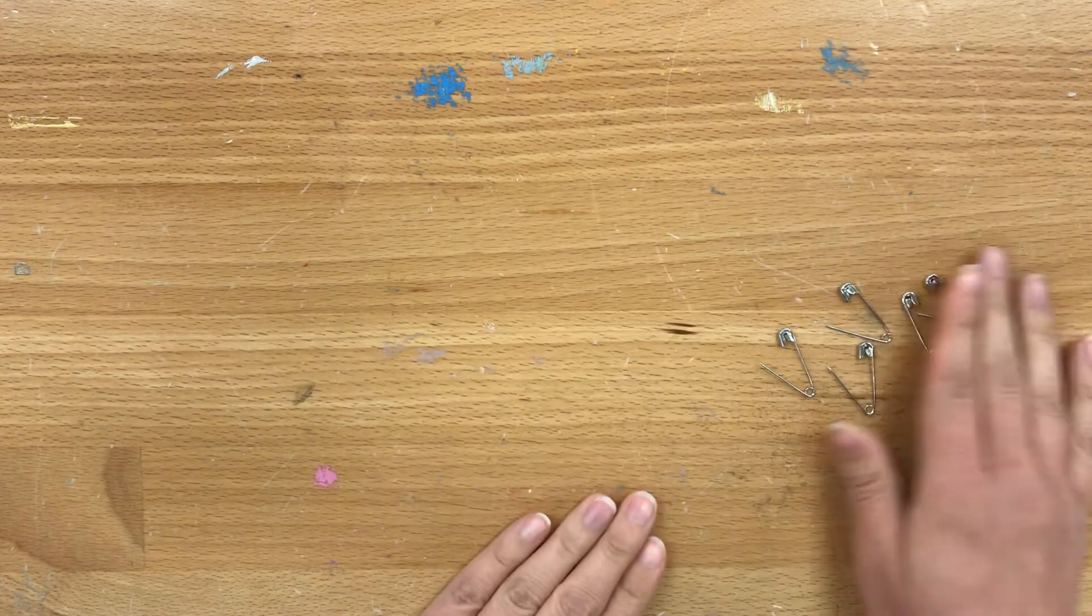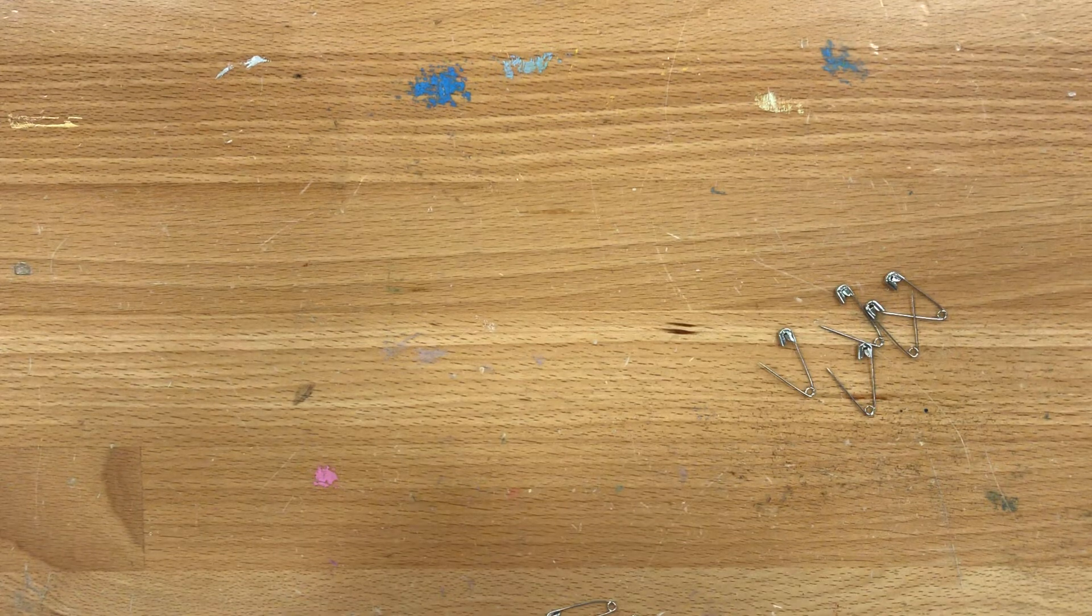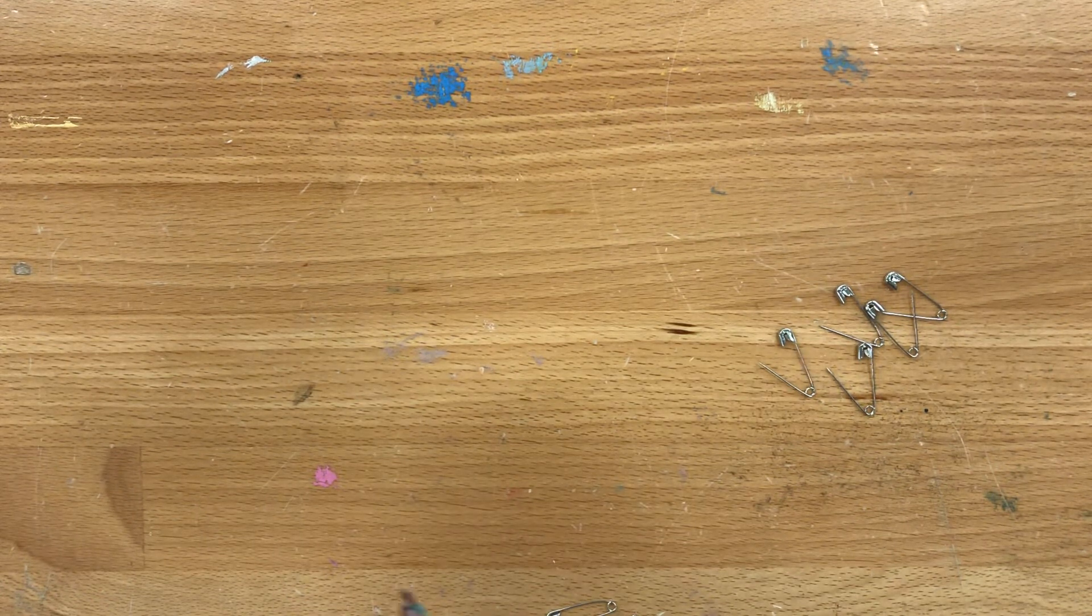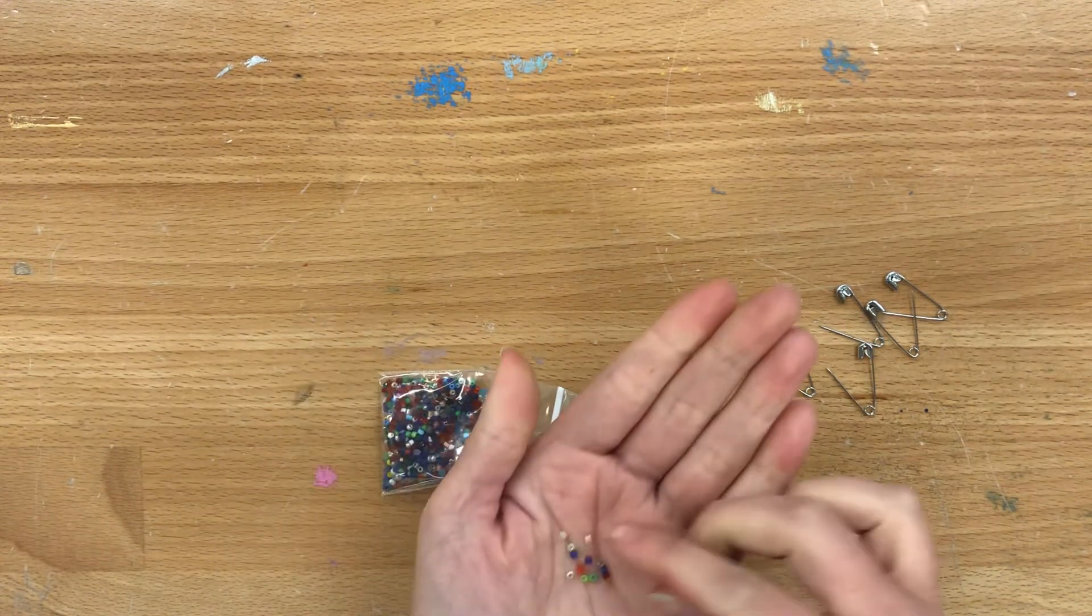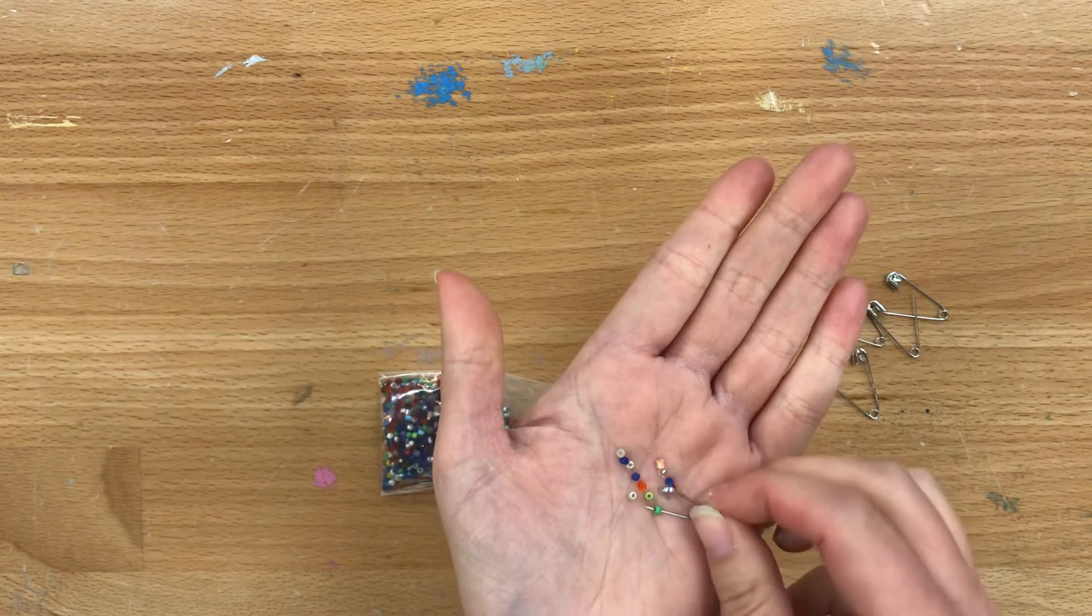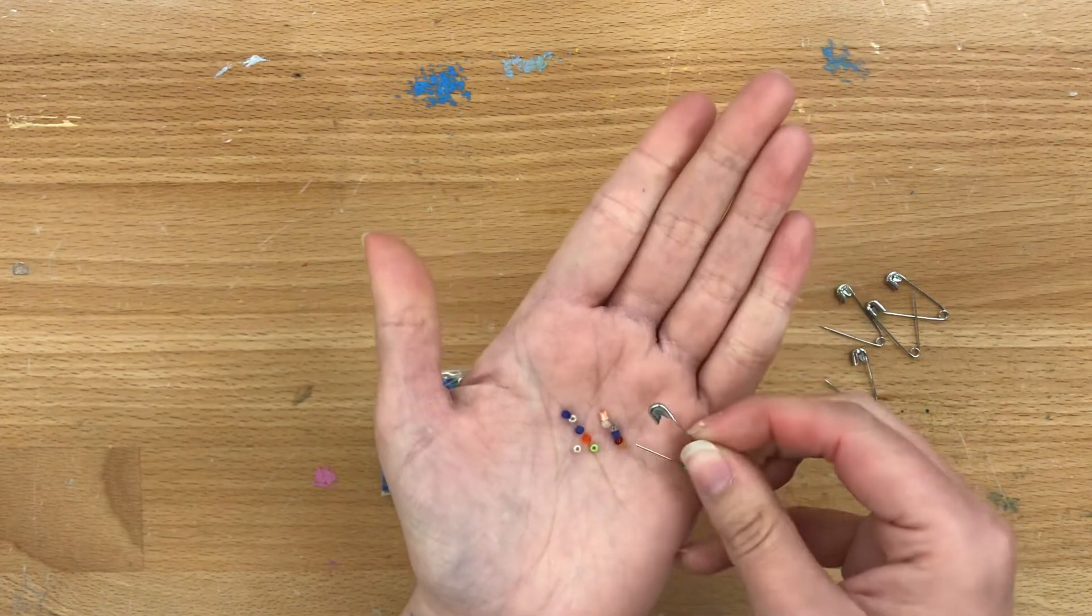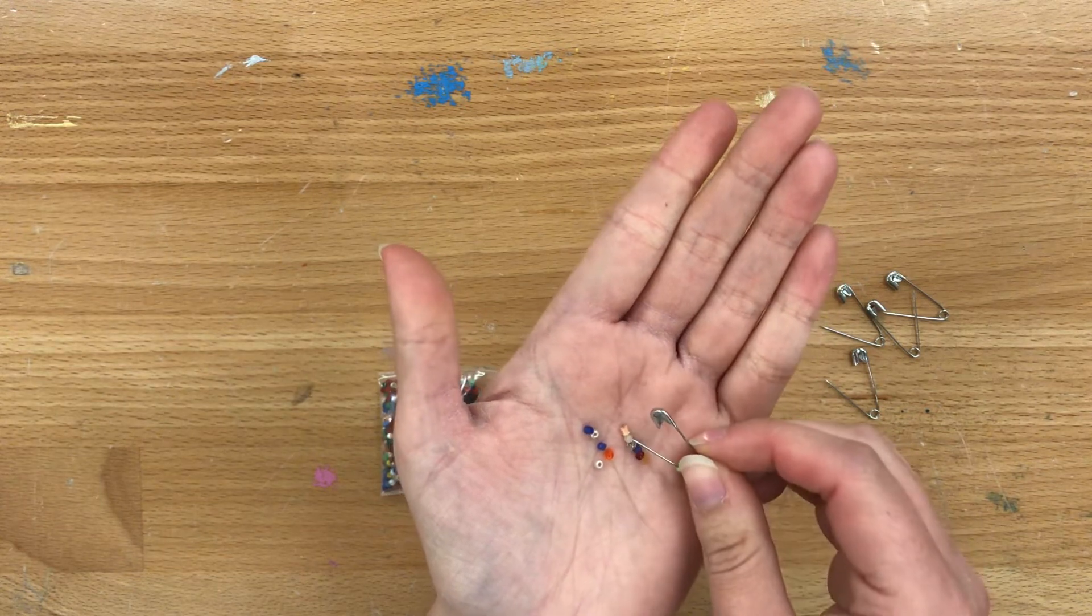So once you have all of your safety pins open you're going to start beading each pin. So taking some of the seed beads from your kit, I just like to grab a couple in my hand and then kind of feed them onto the sharp end of your safety pin. Careful not to poke yourself.